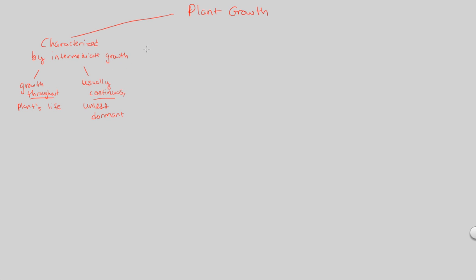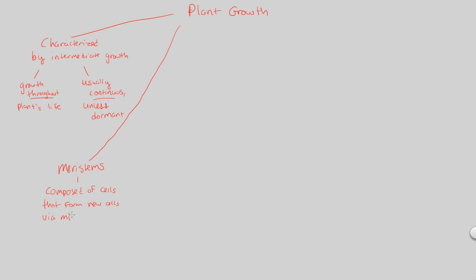That's our basic working knowledge of plant growth. The reason why this happens so successfully is because of specific structures. The first structure to understand are things known as meristems. Meristems are regions within the plant composed of cells that form new cells constantly via mitosis. So wherever you see the term meristem, there's going to be lots of mitosis and lots of new cells forming.